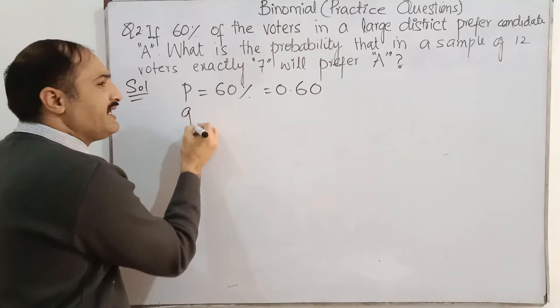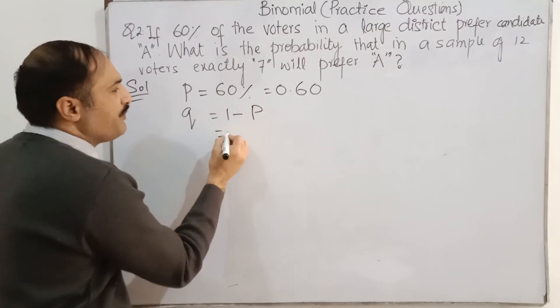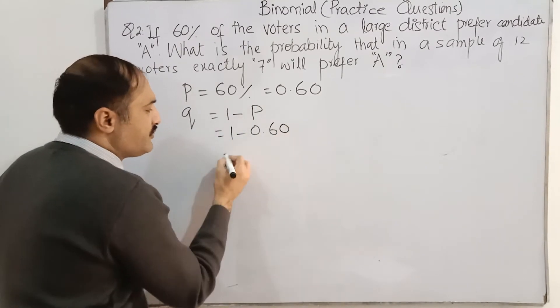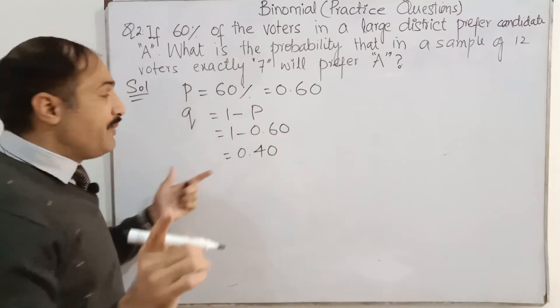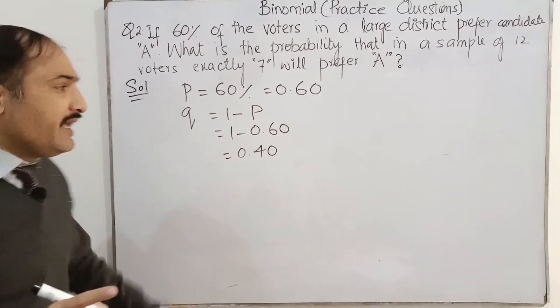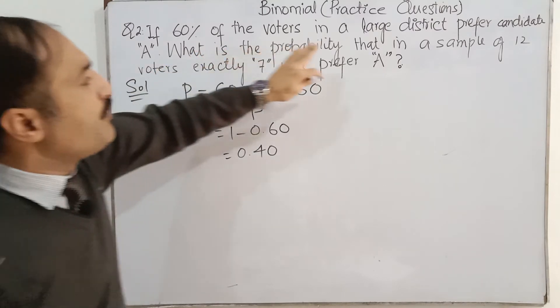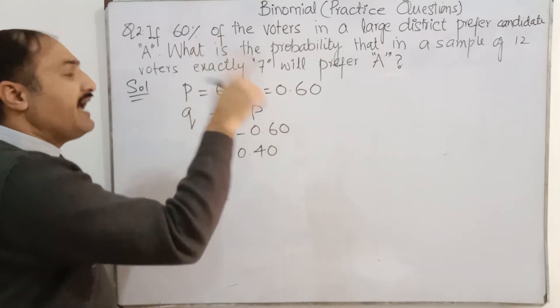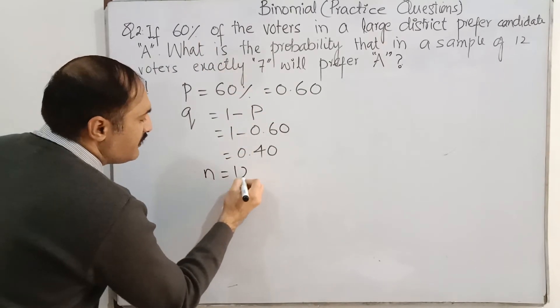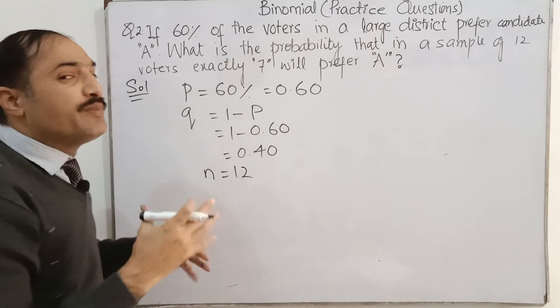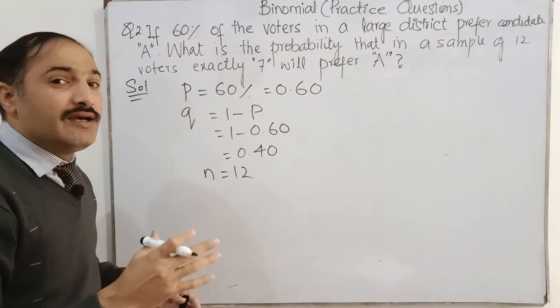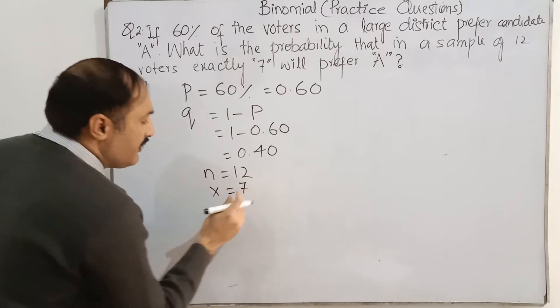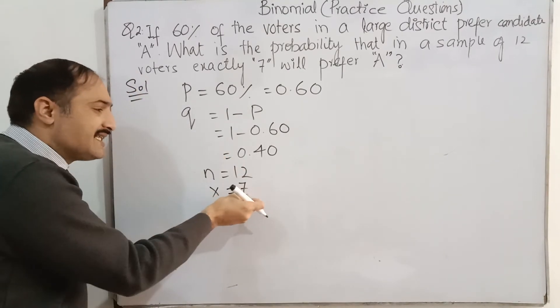What is the probability of failure? 1 minus P. 1 minus 0.60 is 0.40, the probability of failure. What is the probability that in a sample of 12 voters, exactly 7? N is 12. Exactly, number of success, that is 7. X is equal to 7. And total is 12.